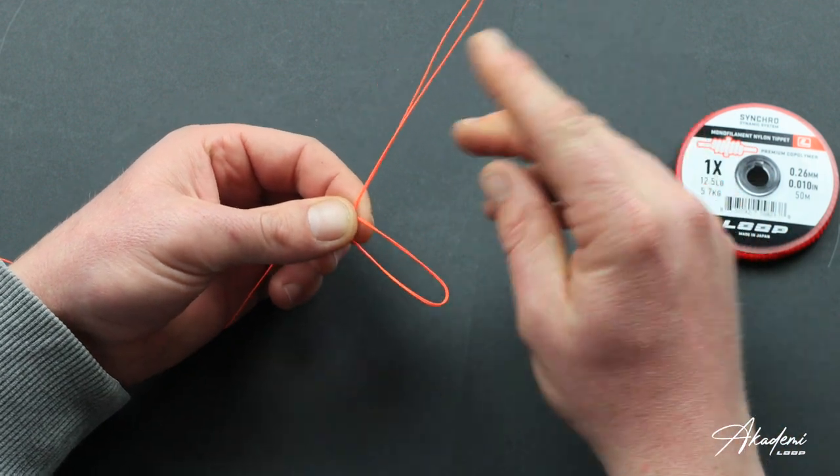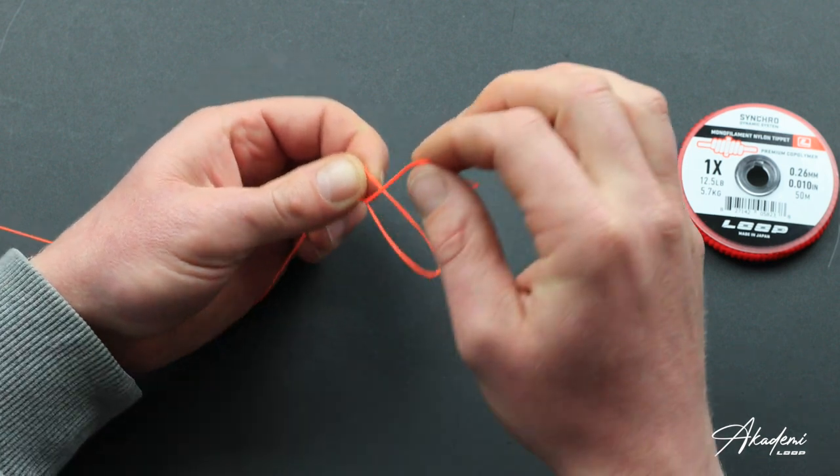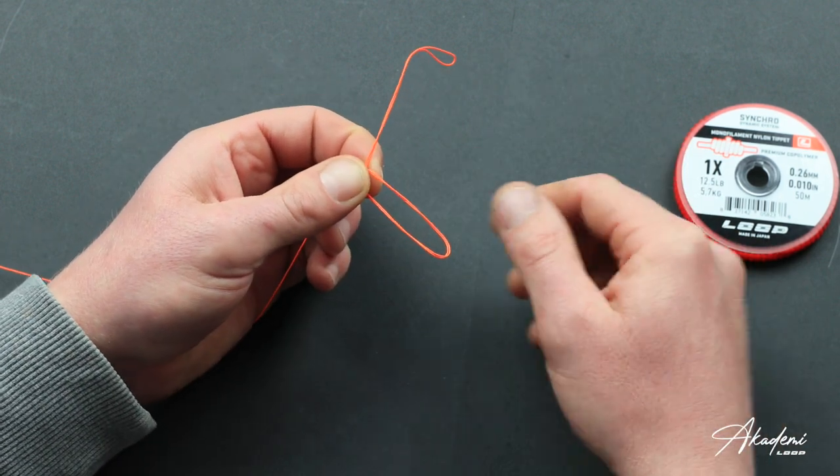From here we're going to take this loop here, we're going to take it a full revolution around the back and over the top and again I've pinched that in my left finger and thumb.